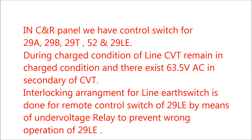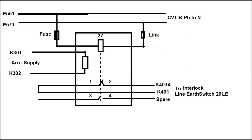The interlocking arrangement for the line earth switch is done for the remote control switch of 29LE by means of the under voltage relay, to prevent any wrong operation of 29LE. That is, it is expected that during a charged condition we cannot operate 29LE. The diagram for the under voltage relay has been shown in this figure.